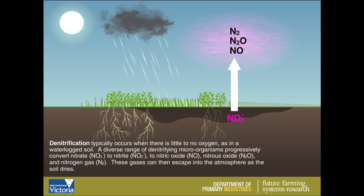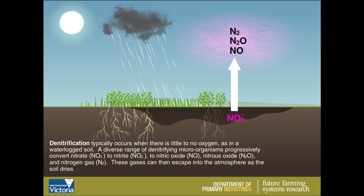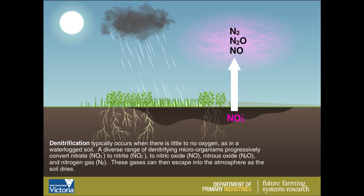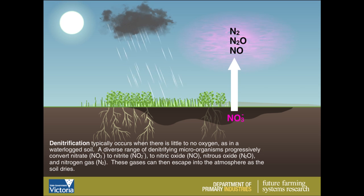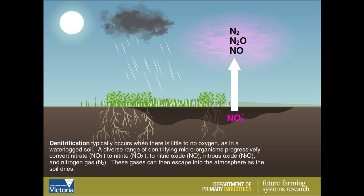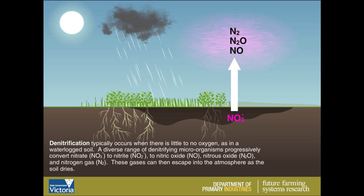Denitrification typically occurs when there is little to no oxygen, as in a waterlogged soil. A diverse range of denitrifying microorganisms progressively convert nitrate to nitrite, to nitric oxide, nitrous oxide and nitrogen gas. These gases can then escape into the atmosphere as the soil dries.